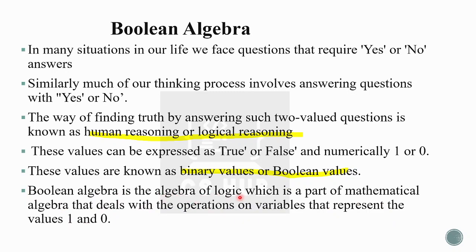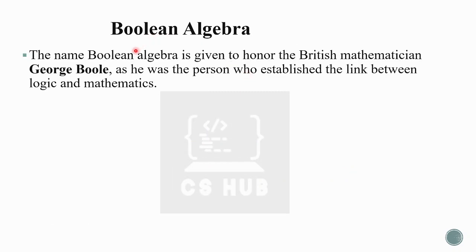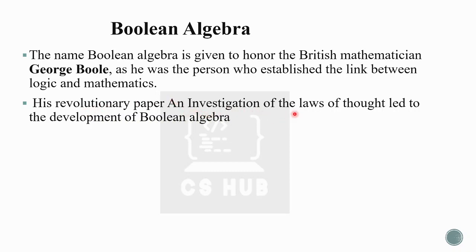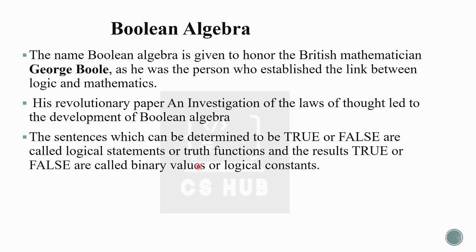Boolean algebra is the algebra of logic, which is a part of mathematical algebra that deals with operations on variables that represent the values one and zero. The name 'boolean algebra' is given to honor the British mathematician George Boole, as he was the person who established the link between logic and mathematics. His revolutionary paper 'An Investigation of the Laws of Thought' led to the development of boolean algebra.